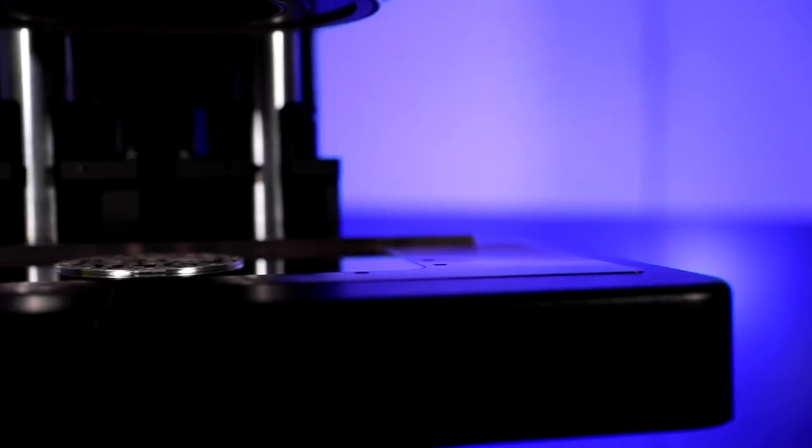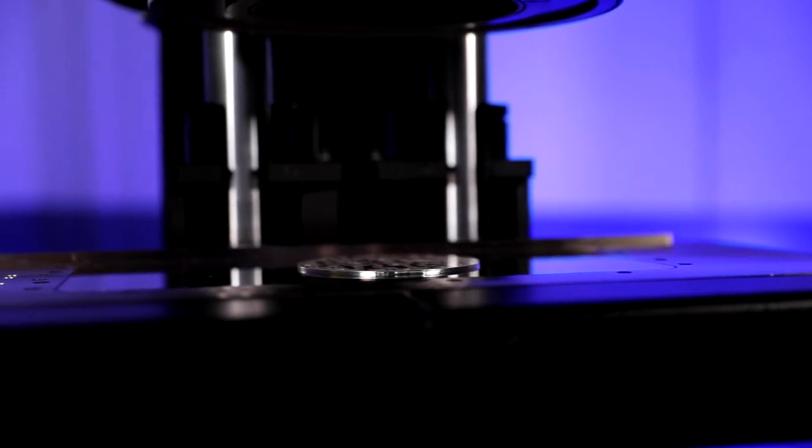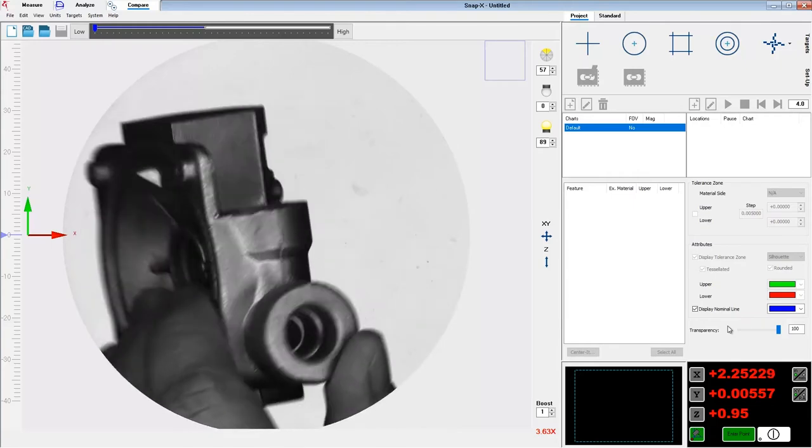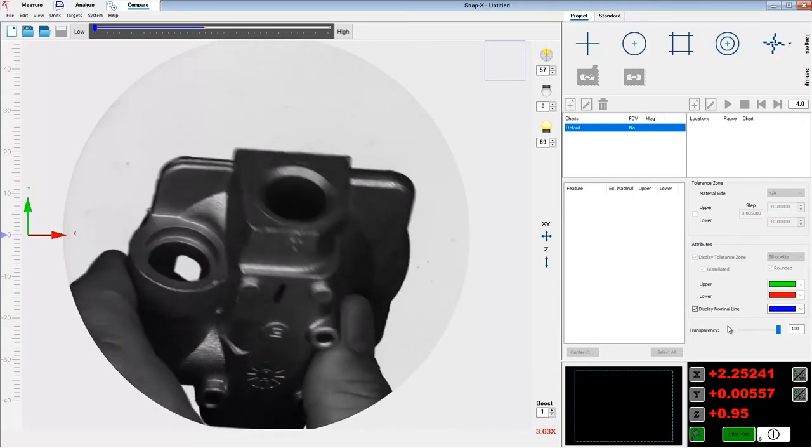SNAP uses its unique fully telecentric large field-of-view optical system to measure small parts with fine features throughout its expansive depth of field. These specially designed optics combined with a high-resolution digital metrology camera produce high-accuracy, low-distortion images.